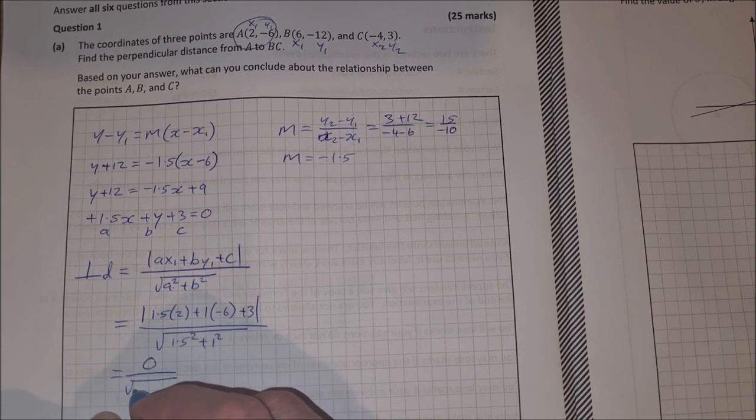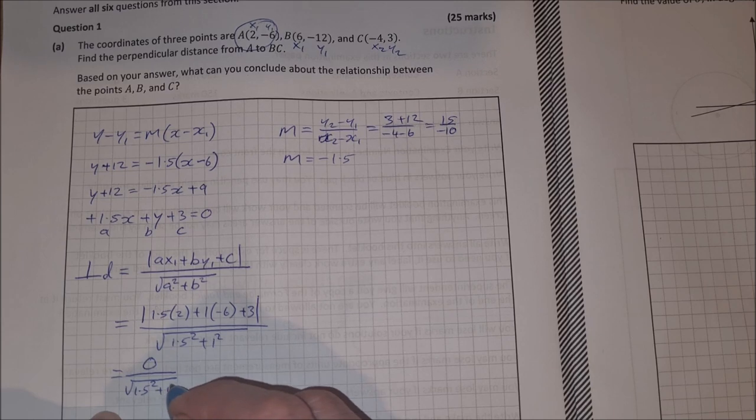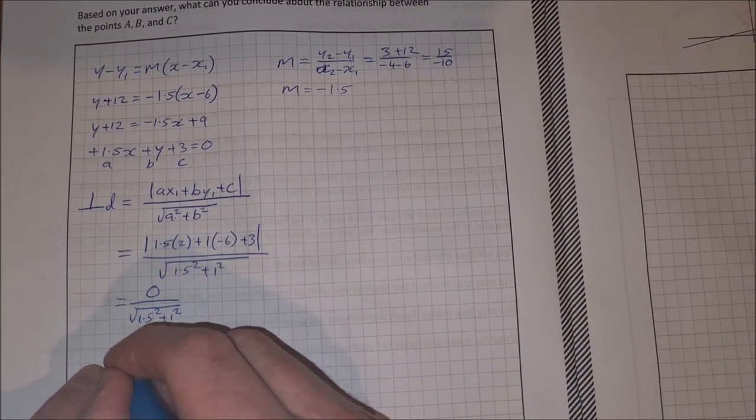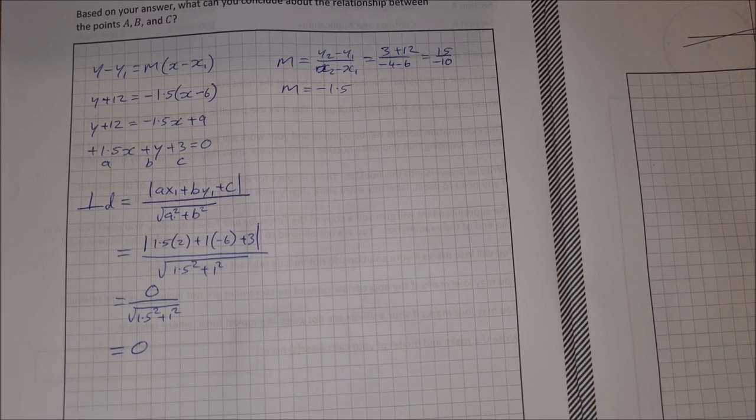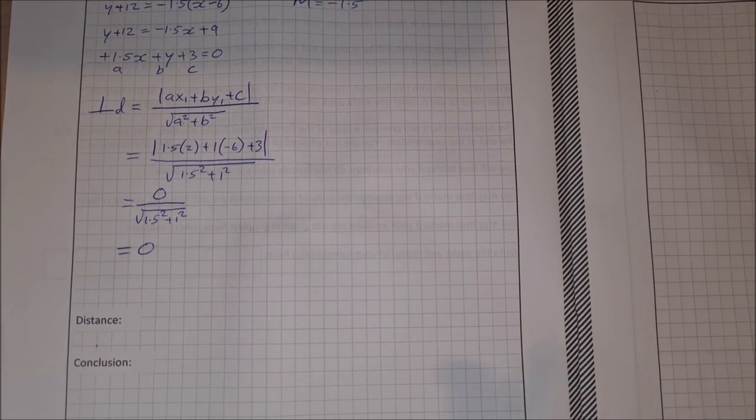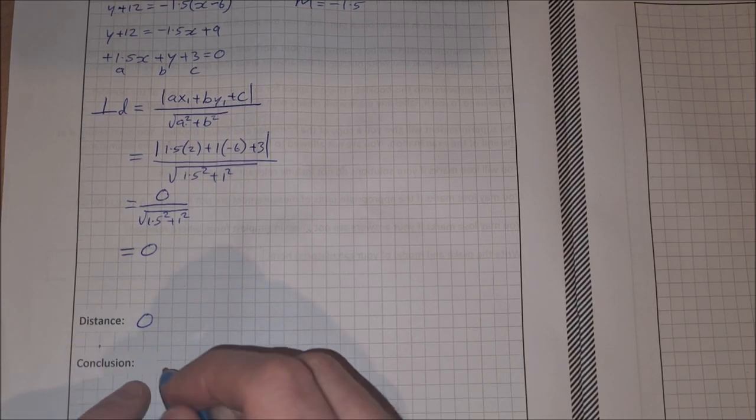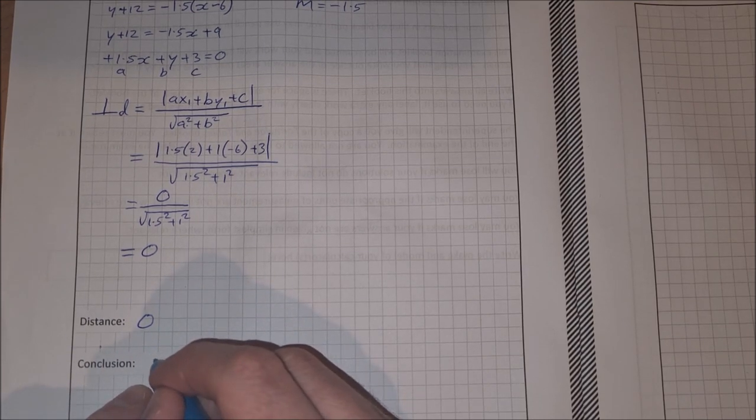So I get 0 on the top of that fraction. I don't need to worry about what's on the bottom, I can just leave it as that there, because I know that a fraction with 0 on the top is equal to 0, which is what I suspected at the start. So the distance is 0, and that conclusion then is that the three points are collinear.